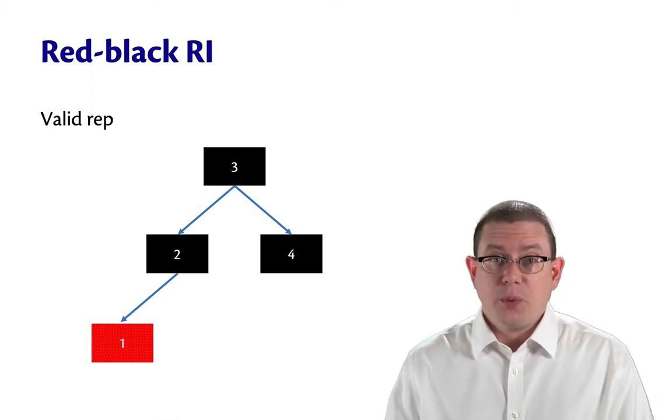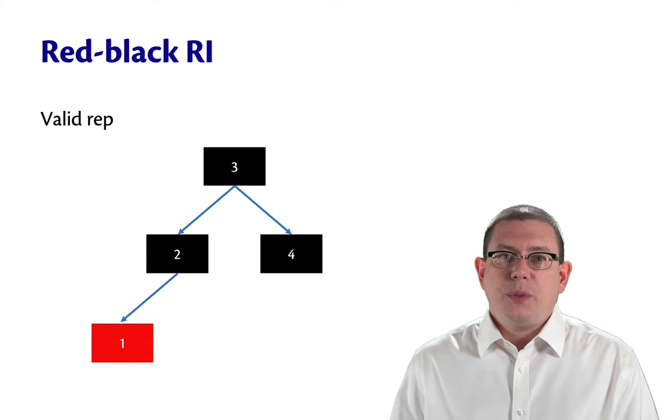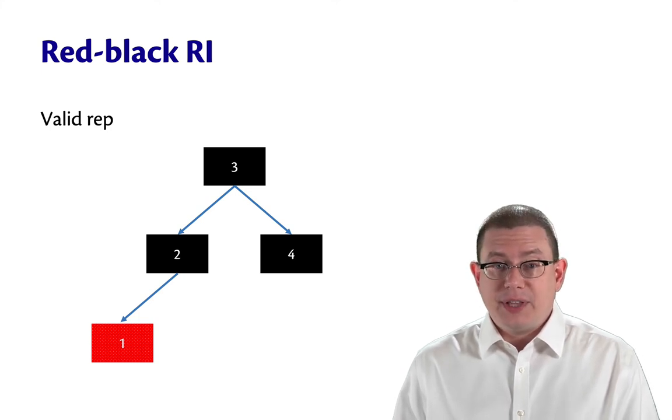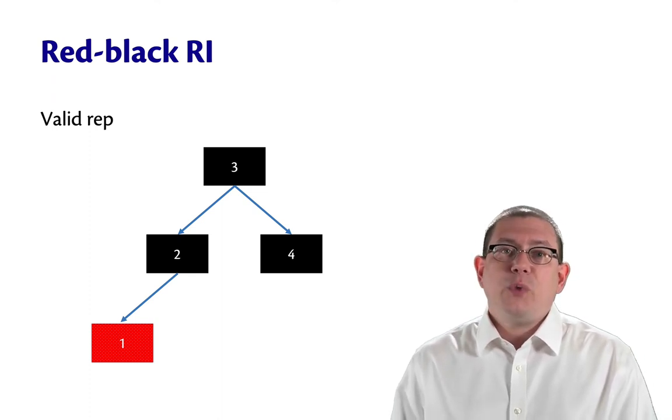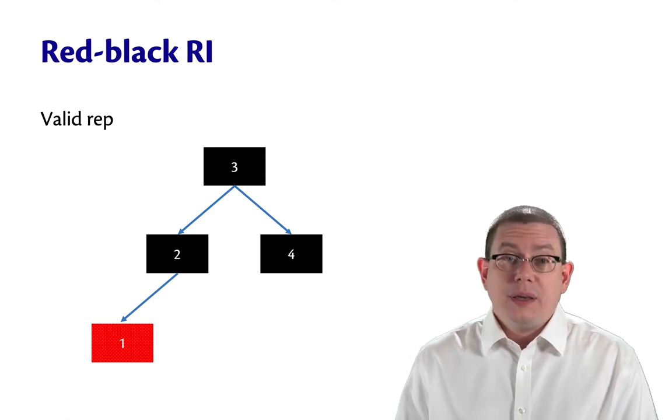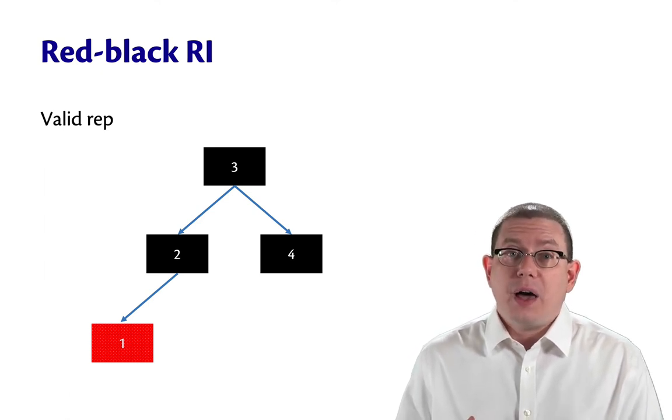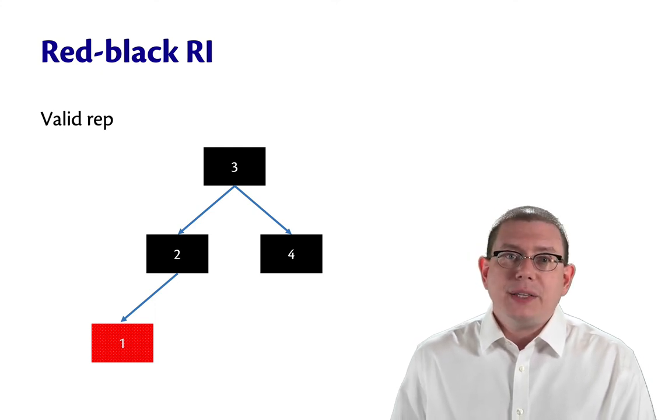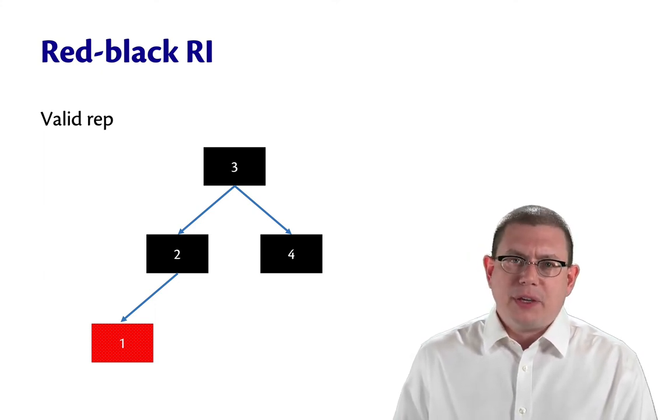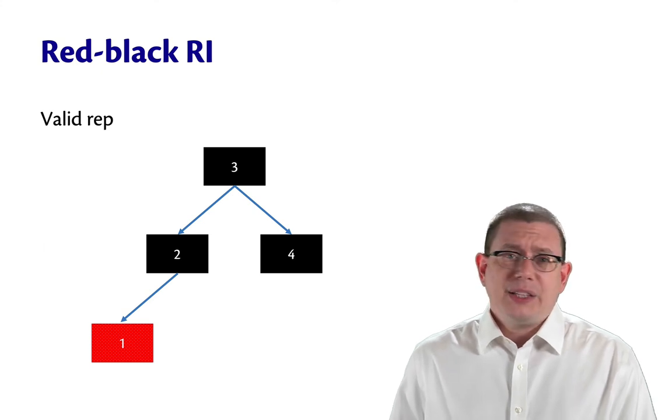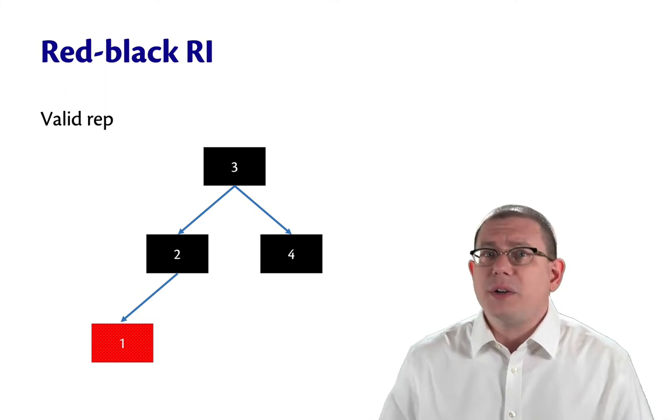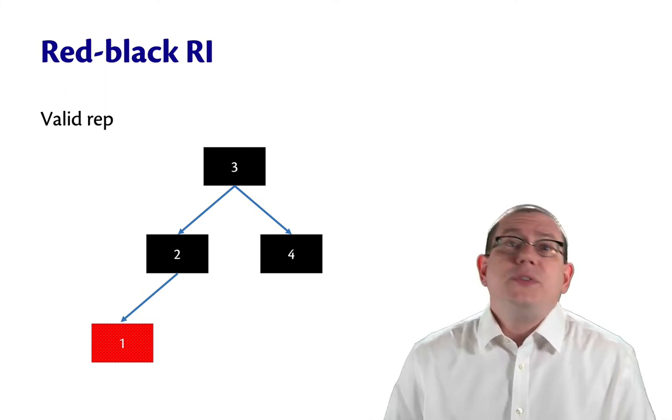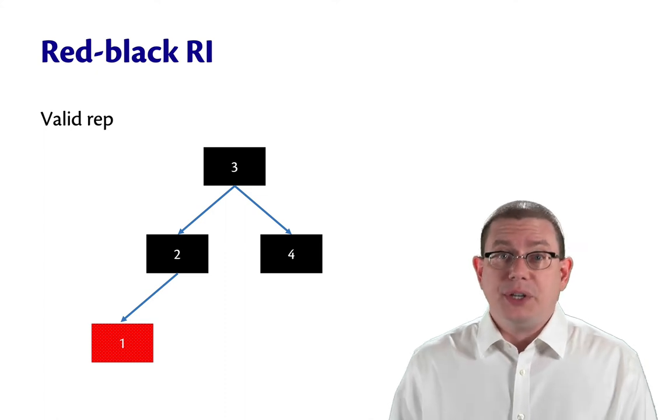Here is a valid red-black tree. The black length of all paths is the same. There's two black nodes on every path. Or, if you count the leaves, three. And we don't have any two red nodes in a row. Now, it's fine that the length of some paths differs. We have some paths in this tree that have length two, some that have length one. That's okay. It's also fine that we don't have the same number of red nodes in every path. That's not a part of any invariant. And it's fine that we have a couple black nodes in a row on a path.